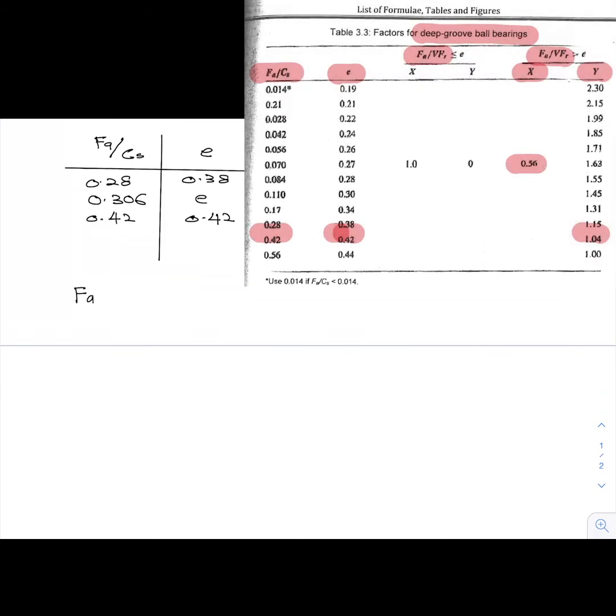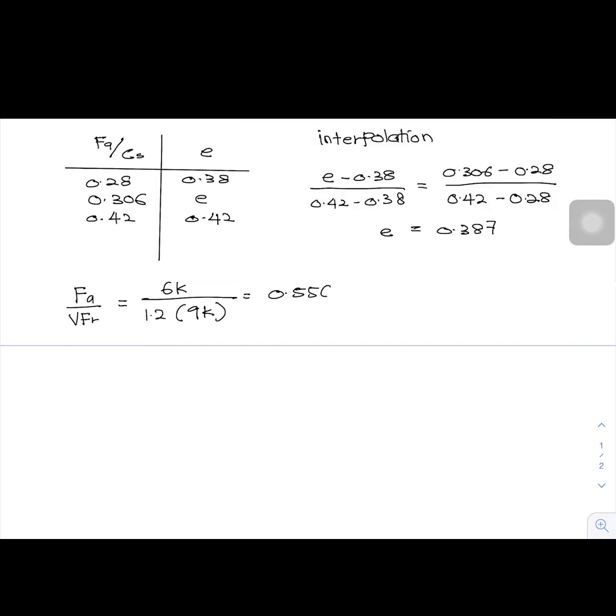Then, calculate the value of FA over VFR to compare with the value of E. From the calculation, we get the value of FA over VFR is equal to 0.556. Meaning that FA over VFR is greater than E.